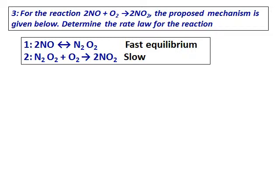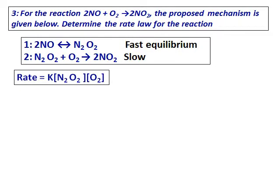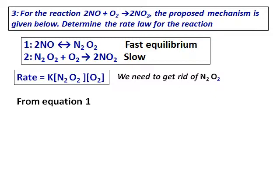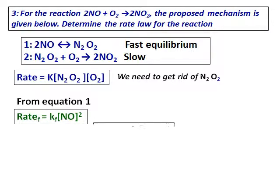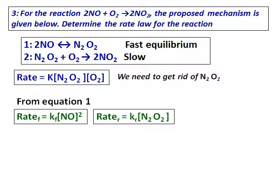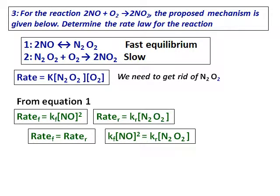When the two equations are added up, N₂O₂ gets cancelled and we get the given overall equation. To write the rate law, we always use the slow step: rate = K[N₂O₂][O₂]. Since N₂O₂ is an intermediate, we need to eliminate it using the fast equilibrium step. From equation 1, the rate of the forward reaction is Kf[NO]² and the rate of the reverse reaction is Kr[N₂O₂]. Setting them equal, we solve for [N₂O₂] in terms of NO.